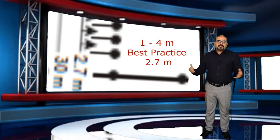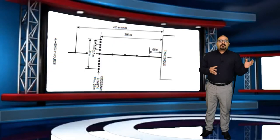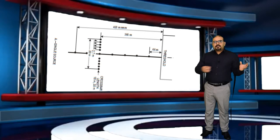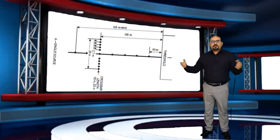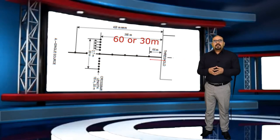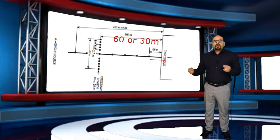As a best practice or general practice, those could be spaced at 2.7 meters. However, for the lights forming the centerline of this approach light, they could be spaced at 30 meters or 60 meters.